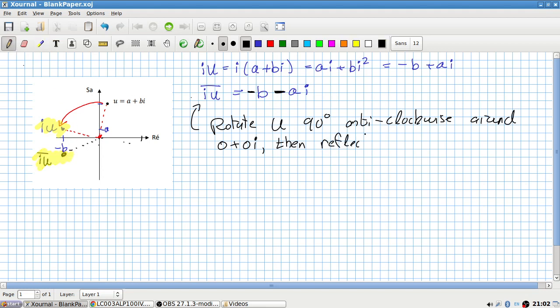So that's i u, and then that's i u conjugate. So then reflect through the real axis. So it's a rotation followed by a reflection straight down through the real axis.